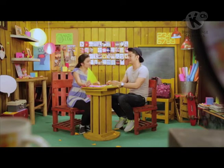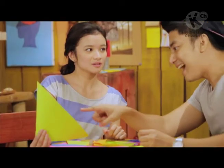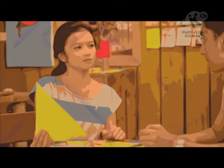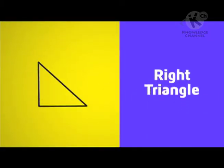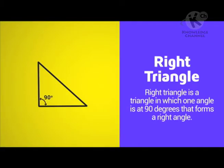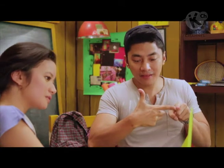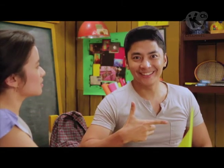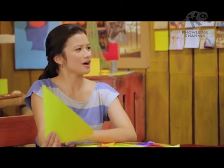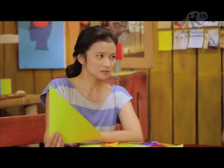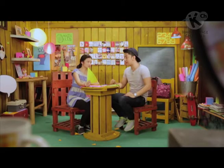Eto! Sige nga! Eh madali lang yan — dahil ang isang angle niyan ay 90 degrees. That forms a right angle. Ang tawag diyan ay right triangle. Nakatsamba ka ha! Anong tsamba? Ikaw nga nakalimutan mo — pag idinagdag mo lahat ng mga angles niyan, ang total sum ay 180 degrees.